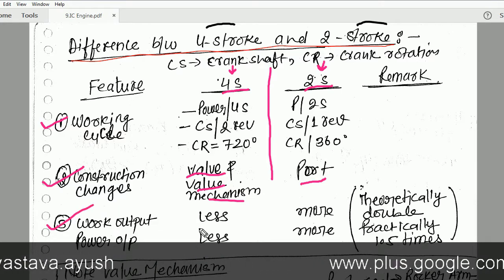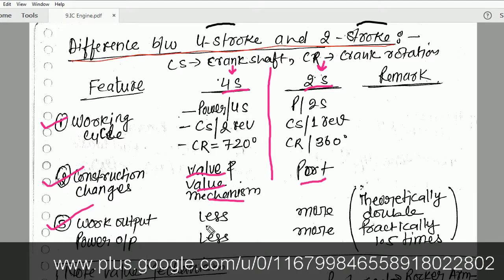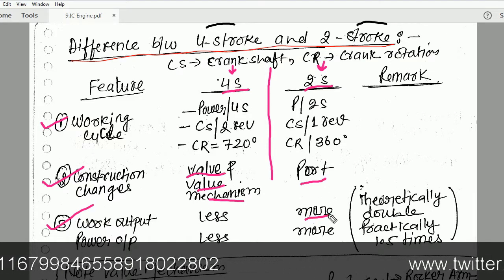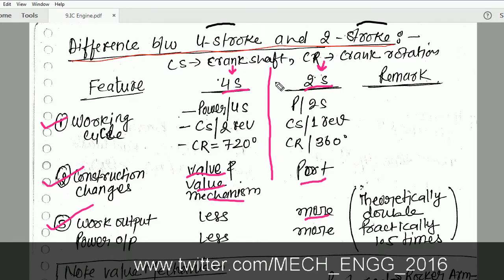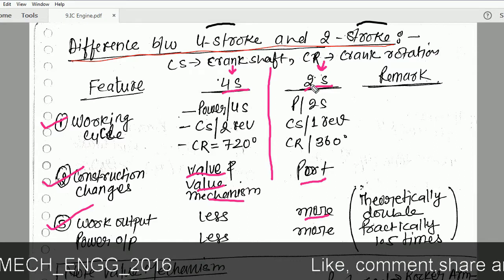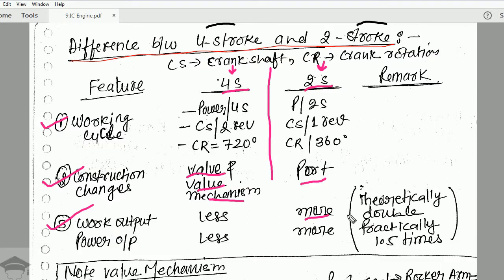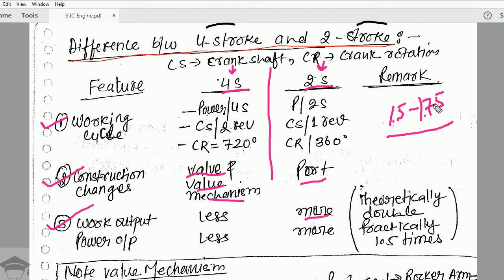Next is the work output. The work output for a four stroke engine is less, while for a two stroke engine it is more. Because the number of strokes is half, theoretically the power output is double. But practically it is 1.5 to 1.75 times the power of a four stroke engine.